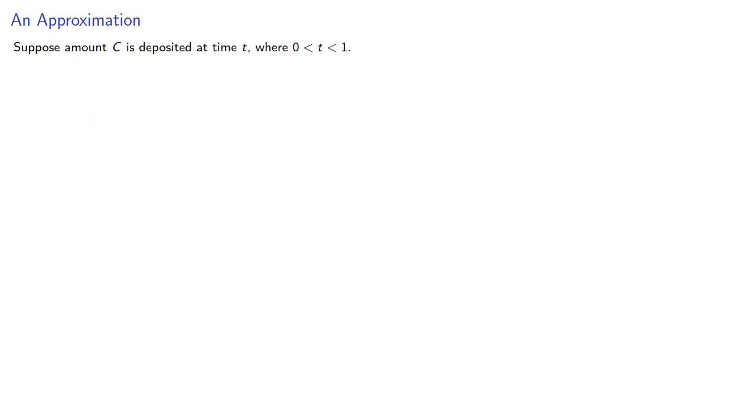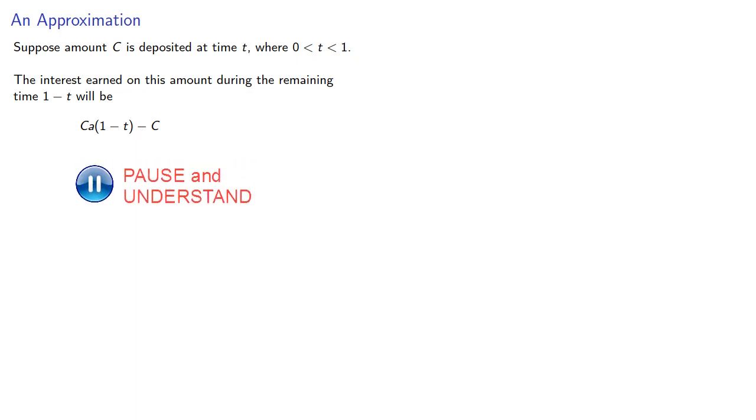Suppose amount c is deposited at time t, where t is between 0, our start, and 1, the end. The interest earned on this amount during the remaining time, 1 minus t, will be the difference between the deposit amount and the deposit amount times the accumulation function. If we're assuming compound interest, which we usually are, then this will be... And here's where our approximation comes in, this exponential expression.